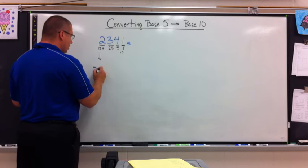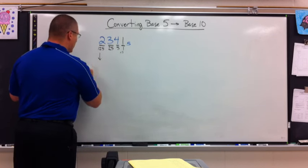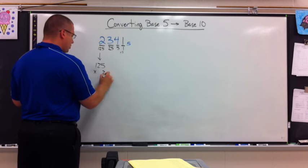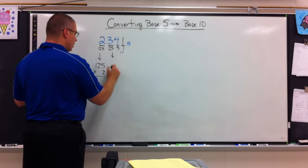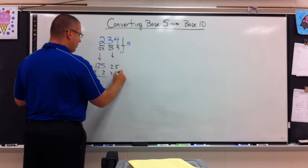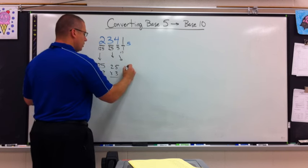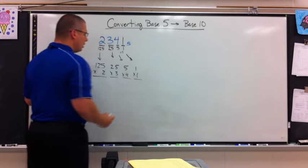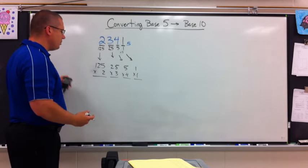2 times 125 is 250. So I will write, I'm going to put the place values on top, times 2. 25 times 3. 5 times 4. 1 times 1. We'll write 1 times 1 even though it's real simple.